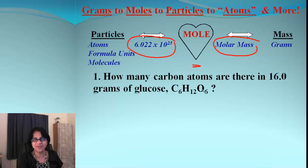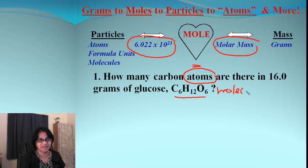Question number one: how many carbon atoms are there in 16.0 grams of glucose? We have to go to carbon atoms and this is glucose, this is a molecule. One molecule of glucose contains six atoms of carbon. Keep that in mind.